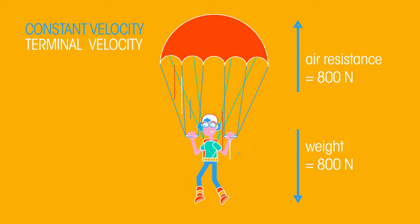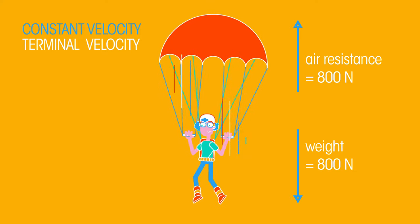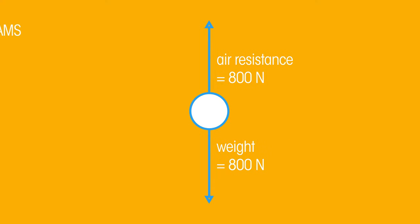We can also draw these force diagrams without showing the object involved. These are called free body diagrams. For example, here is a free body diagram of the forces acting on the parachutist.